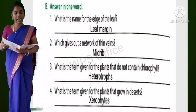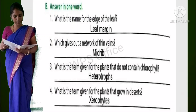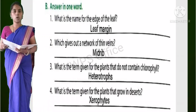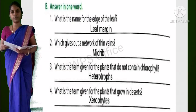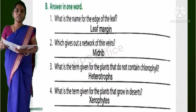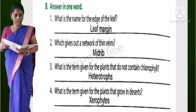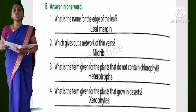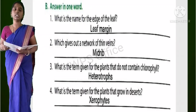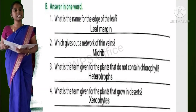Section B: Answer in one word. First question: What is the name for the edge of the leaf? Answer is leaf margin. Second one: Which gives out a network of thin veins? Answer is midrib.